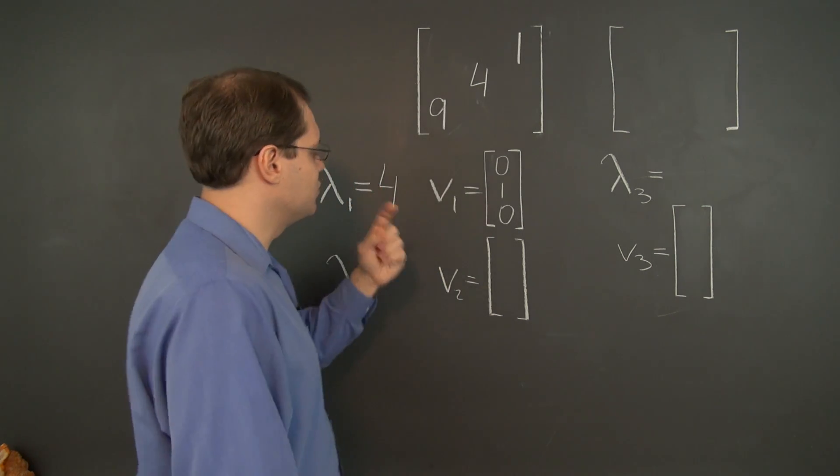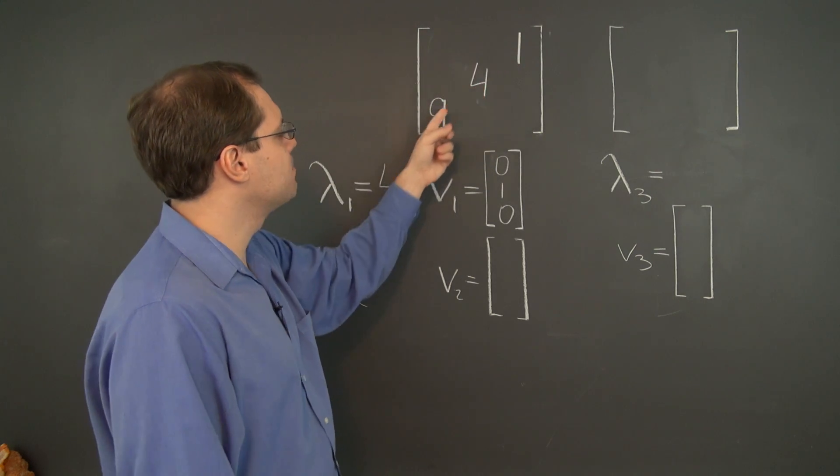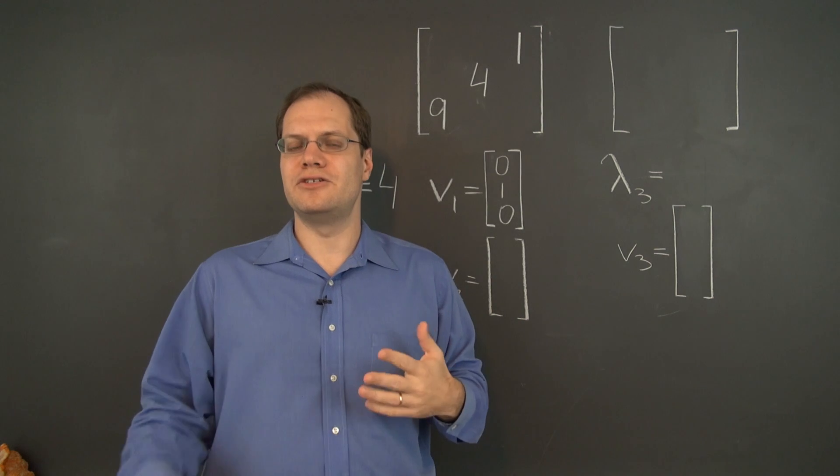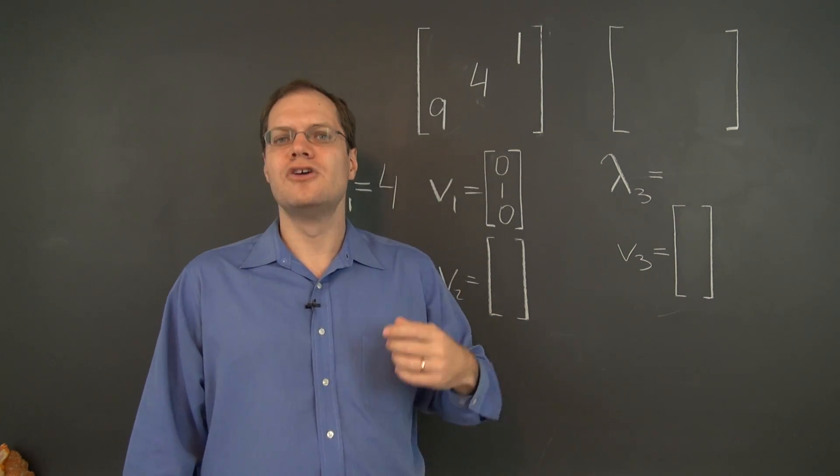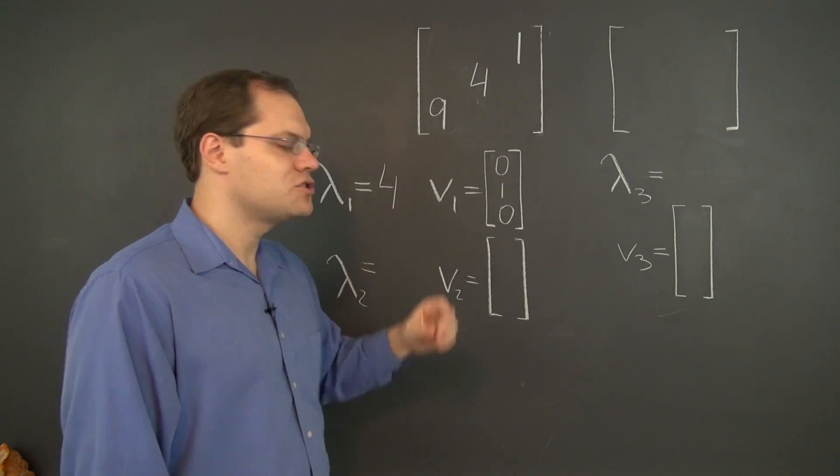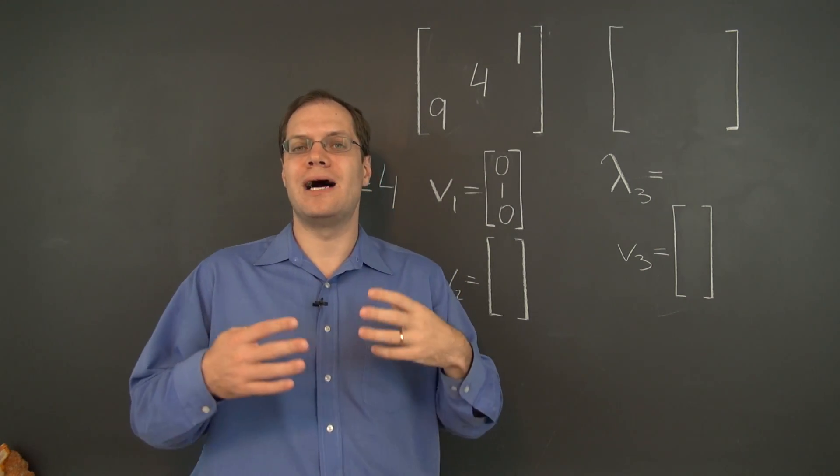What's their product? Well, the determinant of this matrix is minus the product of these three elements, if you remember how to compute the determinant of a three by three matrix. So it's minus 36, and one of them is four, so the product of the remaining two is minus nine.